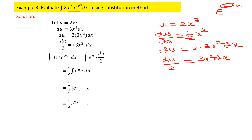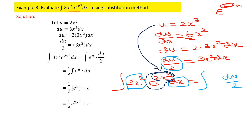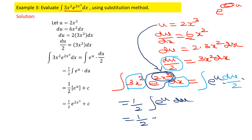The given problem, integral of 3x² · e^(2x³) dx, converts as follows: replace 3x² dx with du/2, and 2x³ in the exponent with u, giving (1/2) ∫ eᵘ du. Since the integral of eᵘ is eᵘ, we get (1/2)eᵘ + C. Replacing u with 2x³, the final answer is (1/2)e^(2x³) + C.